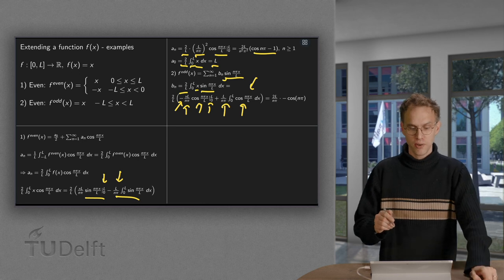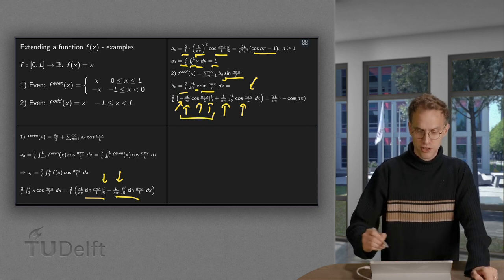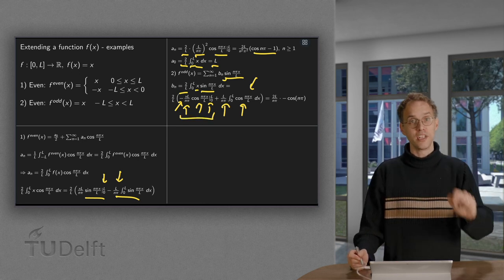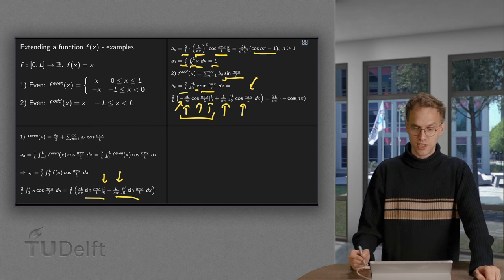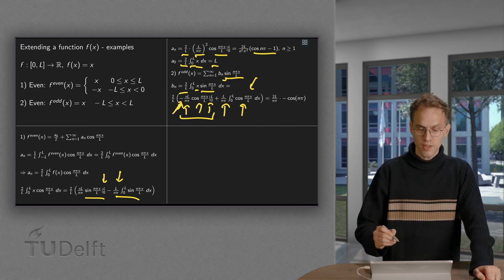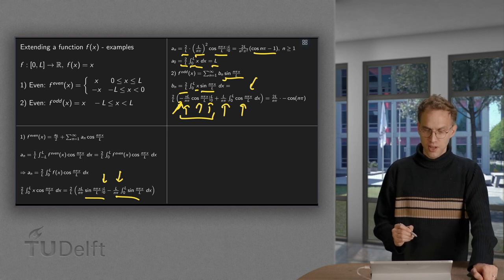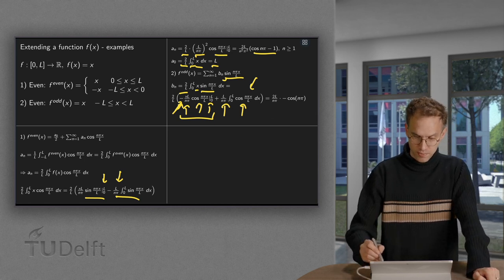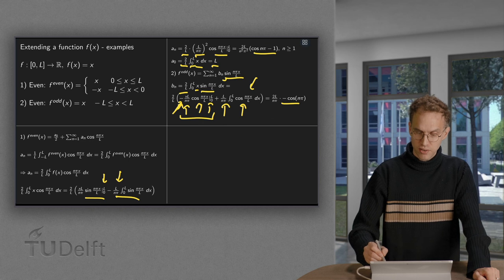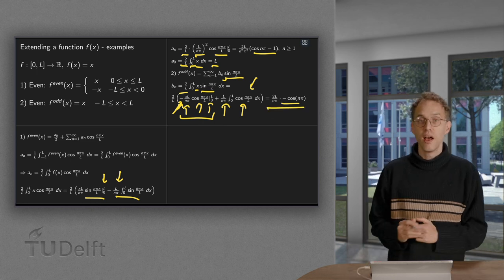If you integrate the cosine, you will get a sine, which is between the boundary 0, so we only have the first term. The lower boundary is 0 because at x equals 0, we have an x over there. And the upper boundary gives us a cosine n pi with the minus sign. So there we have our b_n's.